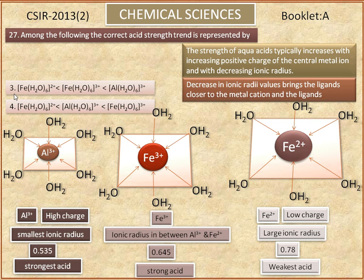The third option states that hexaaqua iron 2+ complex is less acidic than hexaaqua iron 3+ complex, which is less acidic than hexaaqua aluminum 3+ complex. So this is the correct answer. Thank you.